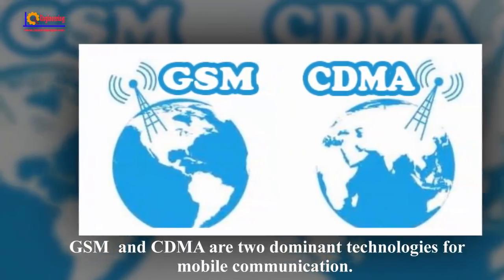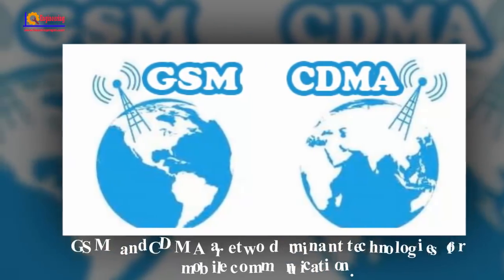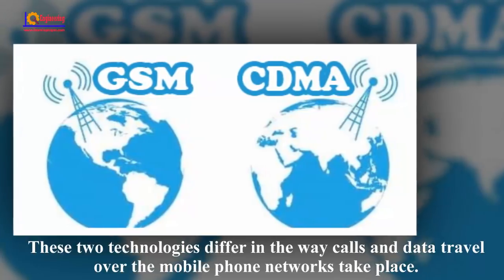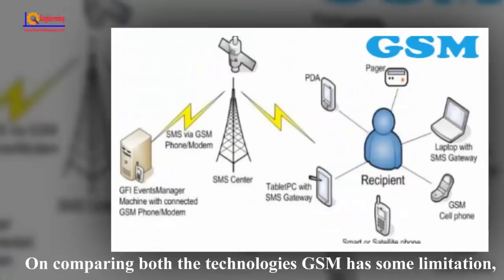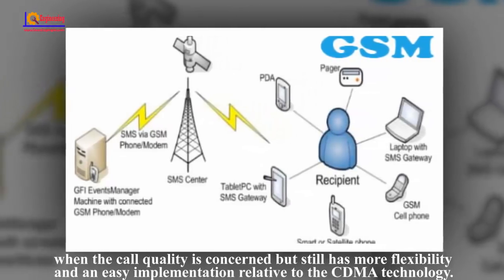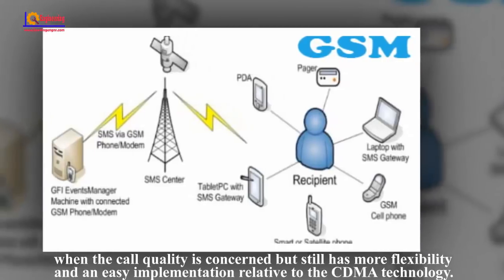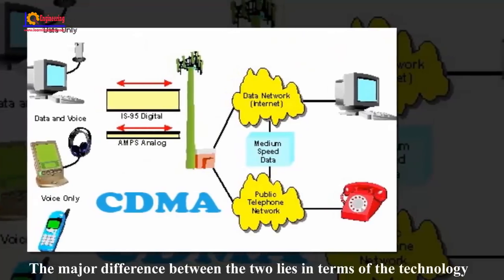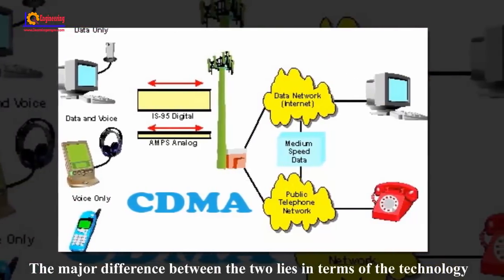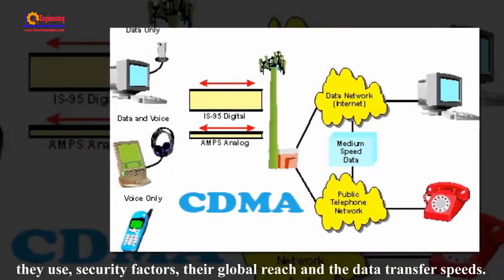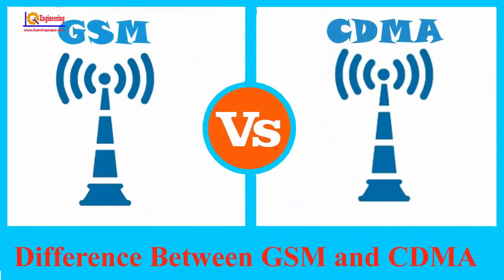GSM and CDMA are two dominant technologies for mobile communication. These two technologies differ in the way calls and data travel over mobile phone networks. GSM has some limitations when call quality is concerned, but still has more flexibility and easier implementation relative to CDMA. The major differences lie in the technology they use, security factors, global reach, and data transfer speeds. In this video, I will show you the difference between GSM and CDMA technology.